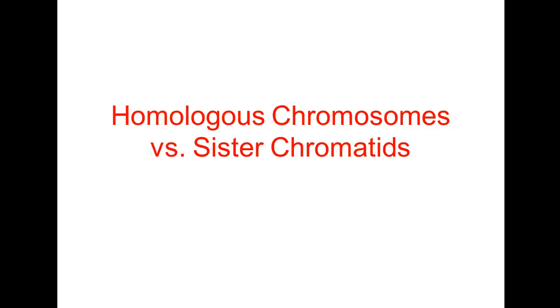This is part 2 of chapter 10 on cell division. We're going to start here with homologous chromosomes and sister chromatids.